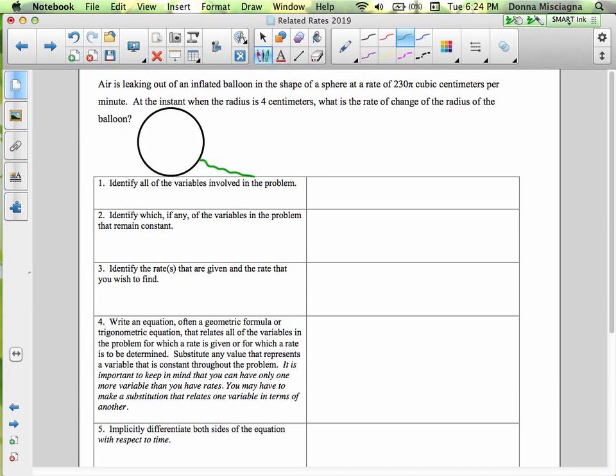So out of our balloon is coming a bunch of air and that is - now is it positive or is it negative? Now think, is the balloon getting more full or less full? Well, if it's leaking out, it's going to be negative 230 pi centimeters cubed per minute. So it's losing air. So we've got our picture there drawn.